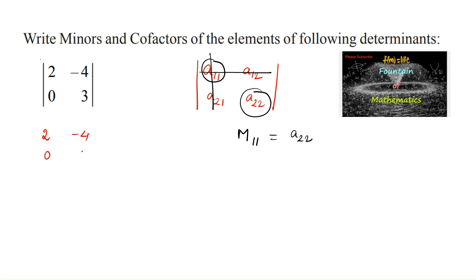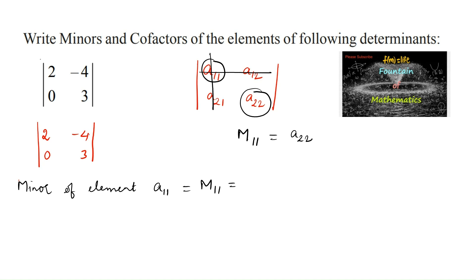For the determinant with elements 2, -4, 0, 3, there are four elements. The minor of the first element 2, which is at position a11, is found by deleting its row and column. We are left with only one element, that is 3, so M11 is equal to 3.